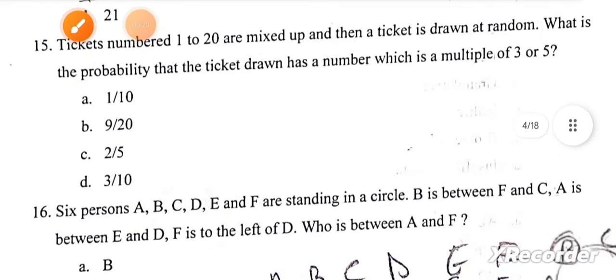Next, tickets numbered from 1 to 20 are mixed up and then a ticket is drawn at random. What is the probability that the ticket drawn has a number which is a multiple of 3 or 5? The correct answer is B.